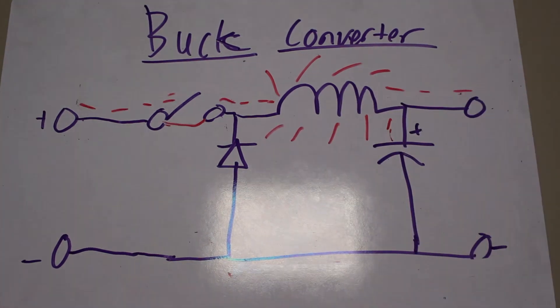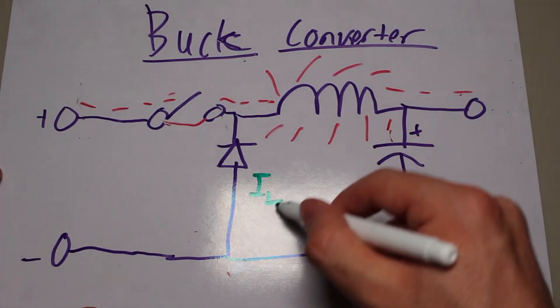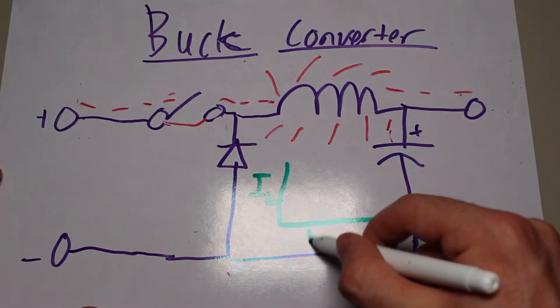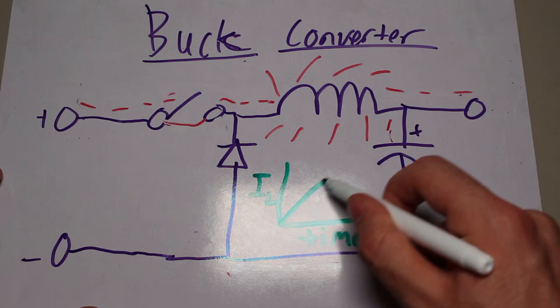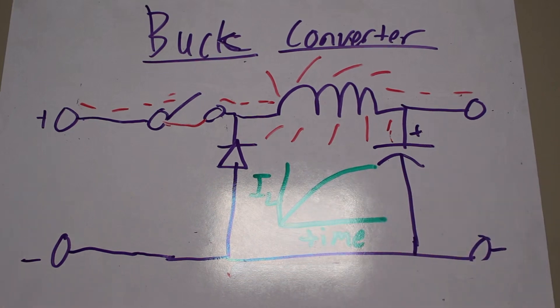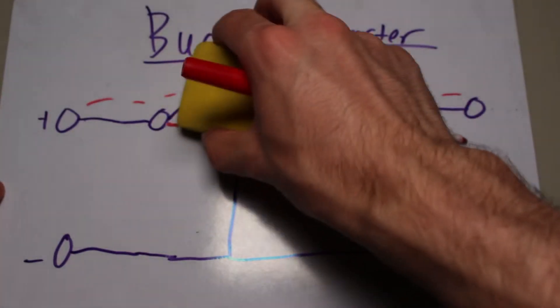But since the coil will want to oppose the changing current, it will generate a voltage drop so that the other side has a lowered voltage. But this voltage drop will decrease over time until the inductor doesn't have a voltage drop and the circuit runs at full voltage and acts as if the coil isn't even there. So that's why we have to reopen the switch.